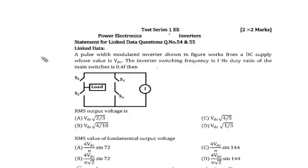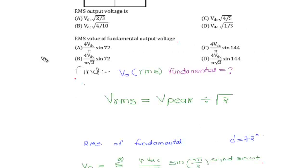This question is taken from test series 1, subject power electronics, topic inverters. It is link data question number 54 and 55, and this is the second part of the link data question. In this, we have to find the RMS value of fundamental output voltage.